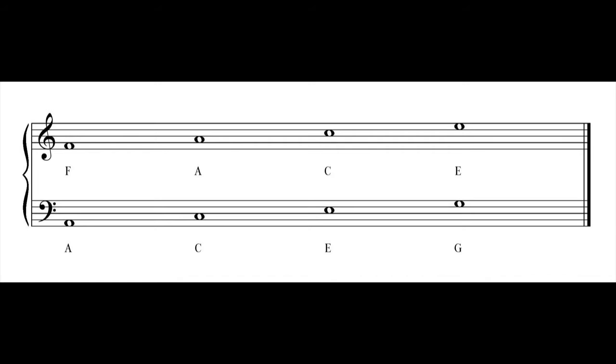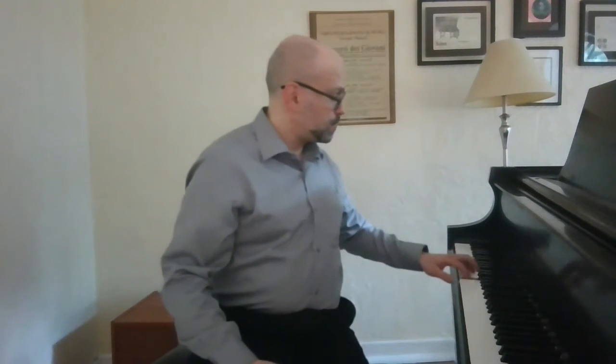The two staffs together, connected by a vertical line and a curved brace, is called a grand staff, and that's what you'll most often be reading piano music on. As we've been looking at the notes in treble and bass clef, we've been seeing the same letters over and over again. For example, we've talked about three different E's: the third space E in the bass clef, the first line E in the treble clef, and the fourth space E in the treble clef.